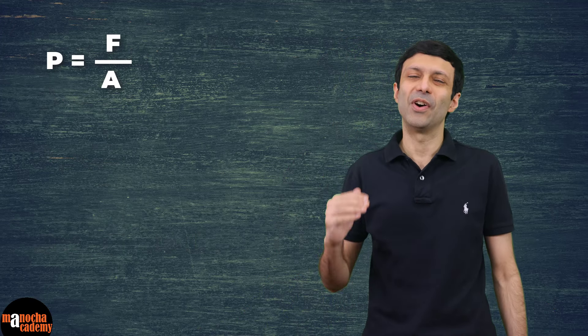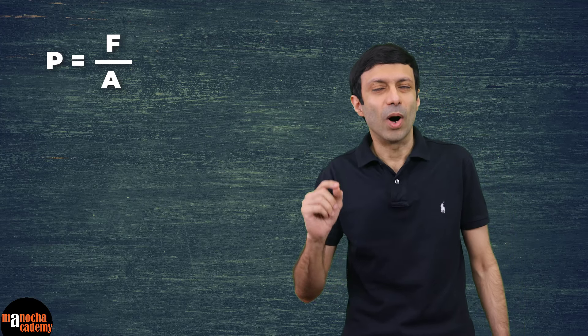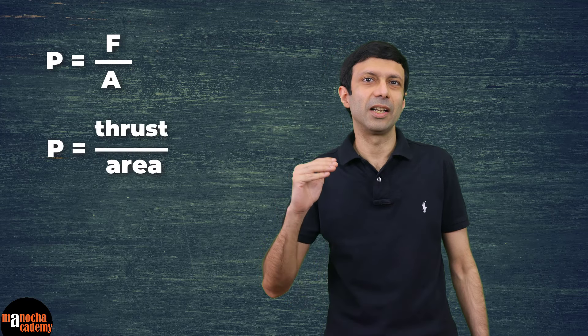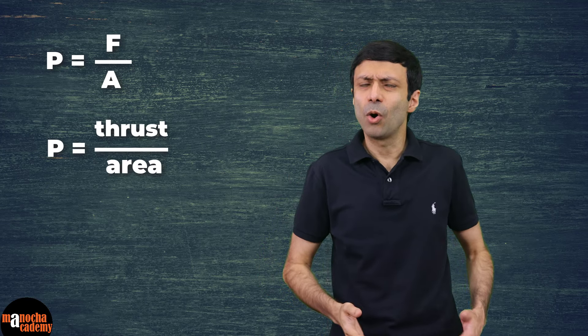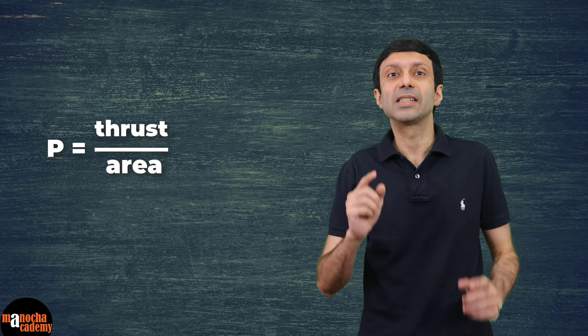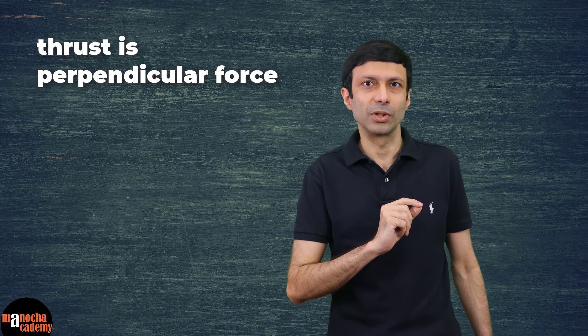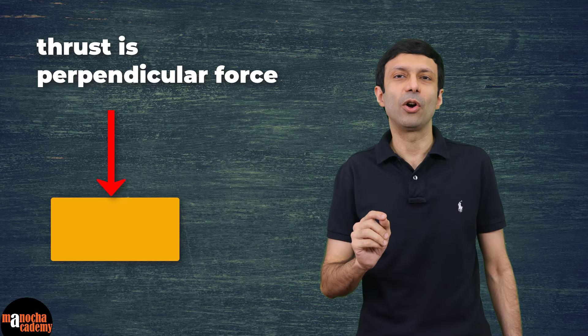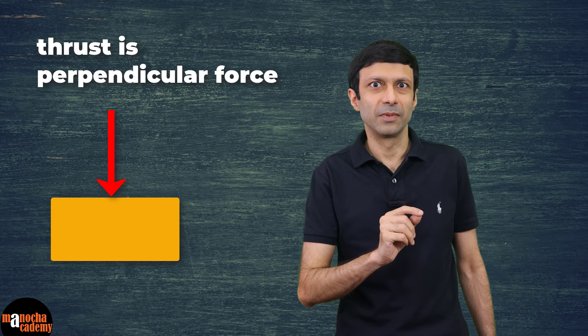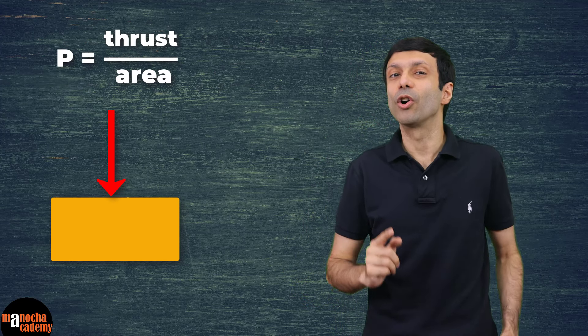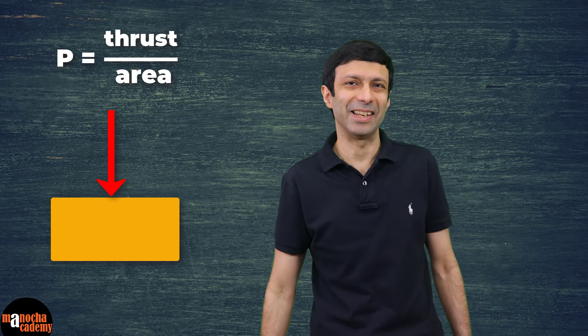We have learnt that pressure is force divided by area. But one important thing to note is that the strict definition of pressure is thrust divided by area. Now what's the difference between force and thrust? Thrust is a perpendicular force. When the force is applied at a 90 degree angle, then we call it thrust. So remember, pressure is thrust by area or the perpendicular force divided by the area.